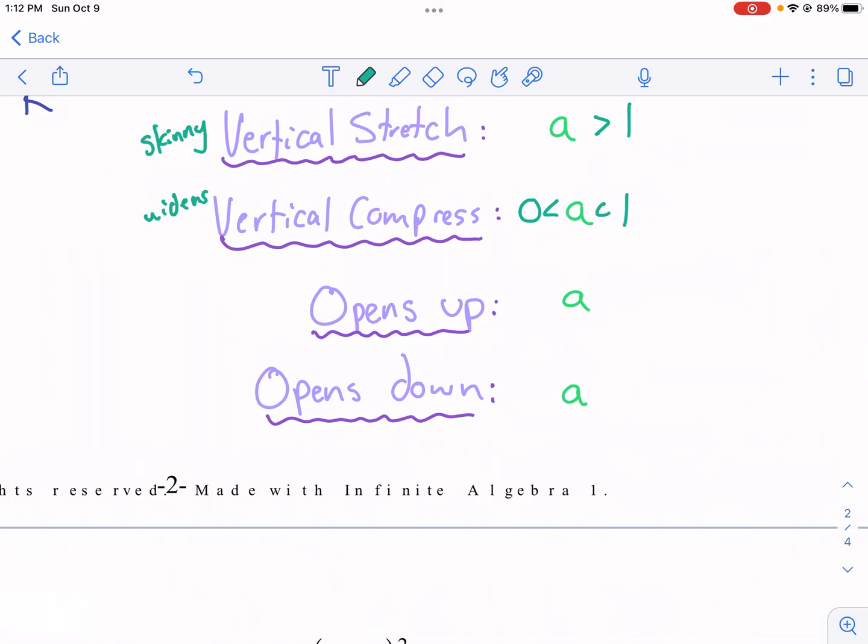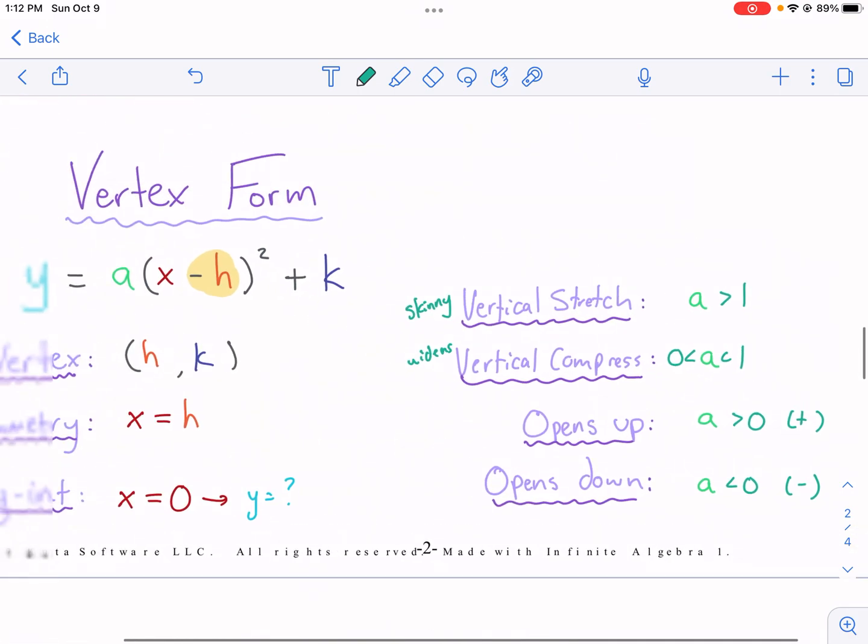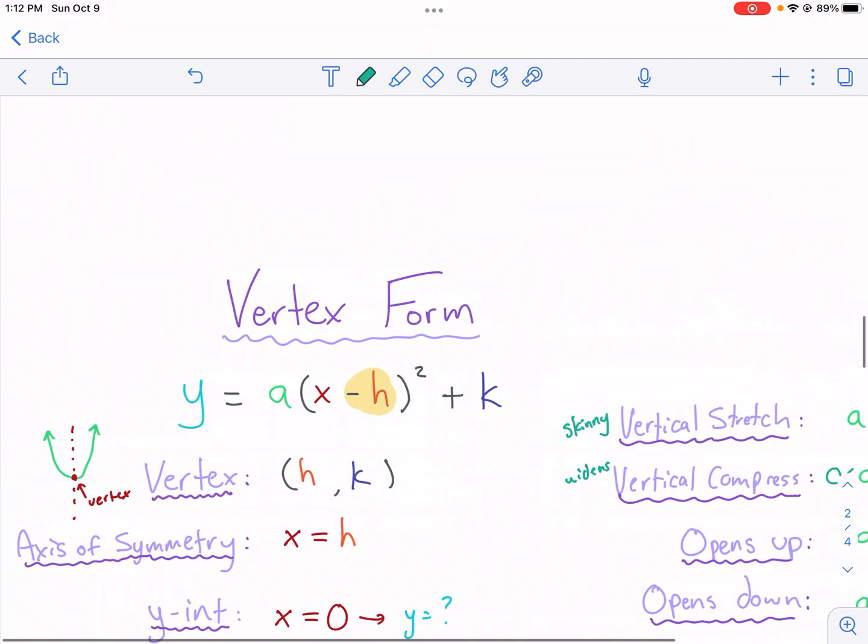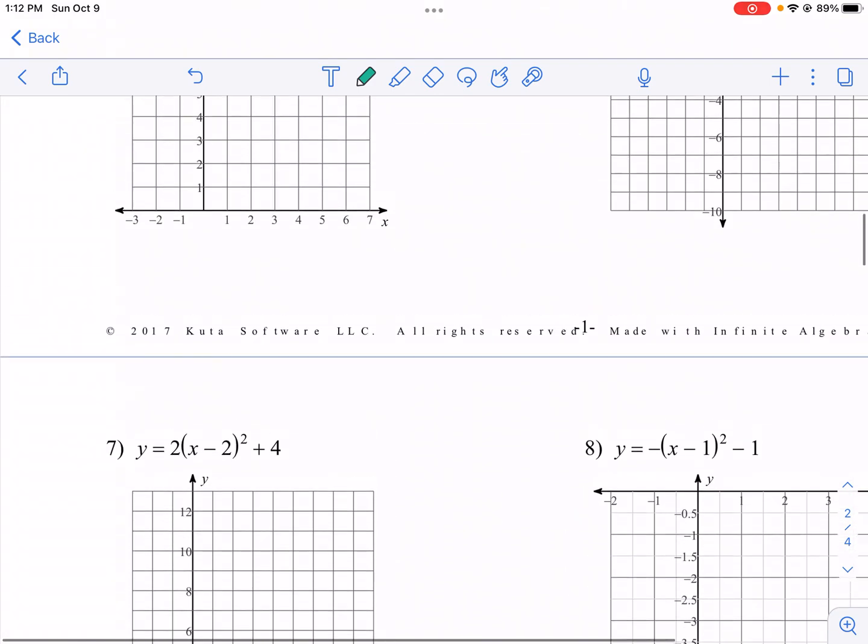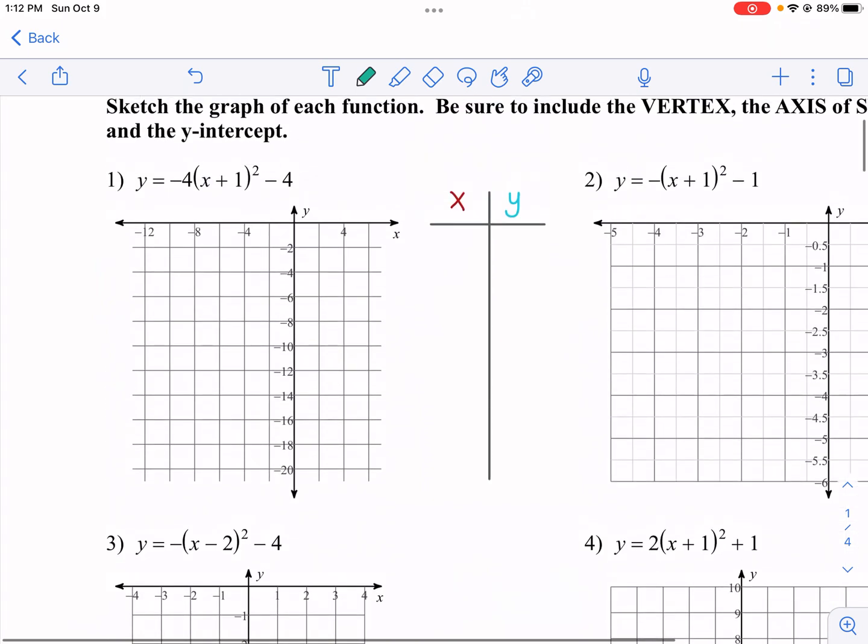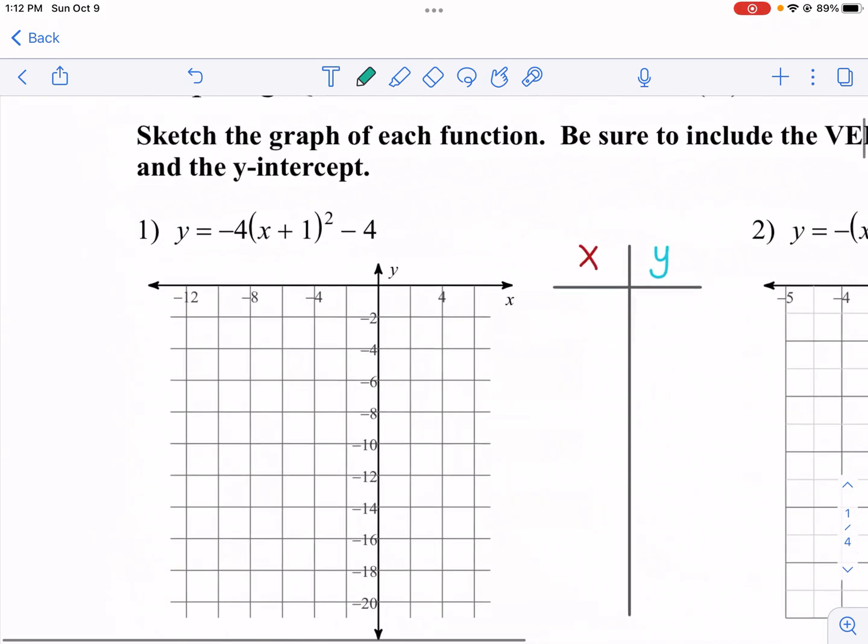Now, if it opens up, that means a is bigger than zero. It's a positive number. And if it opens down, that means it is a negative number. So just some nuance there that will help us graph it. And we're going to show you how this is very effective in our first example. We'll roll through as many as we can and then get to the multiple choice section at the bottom.